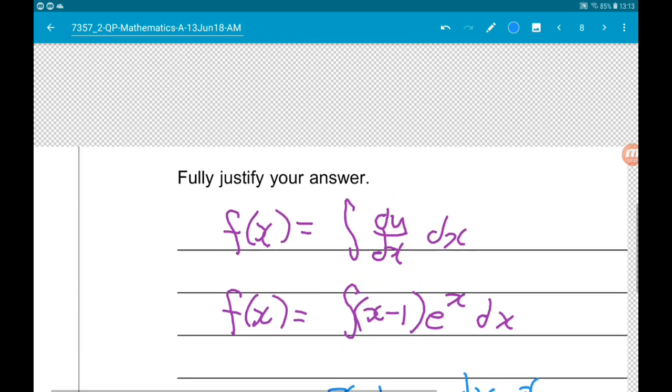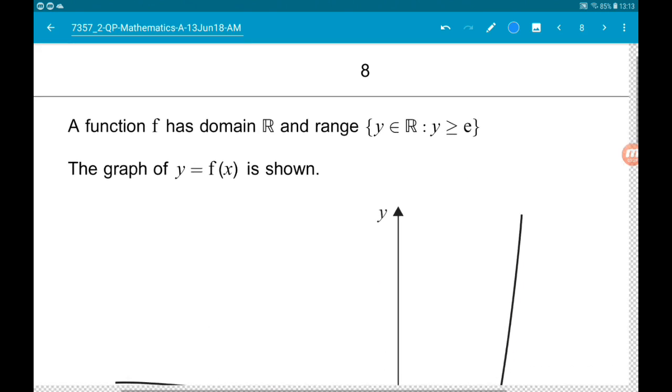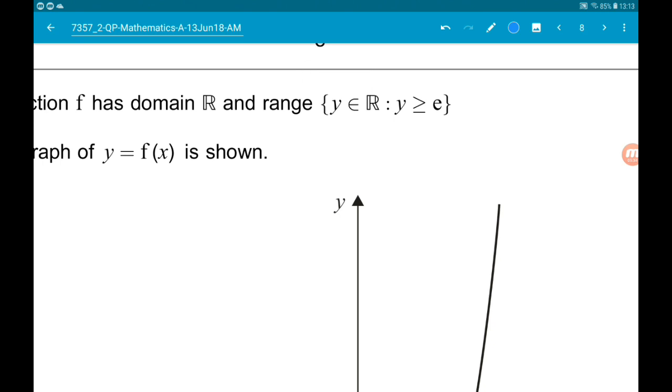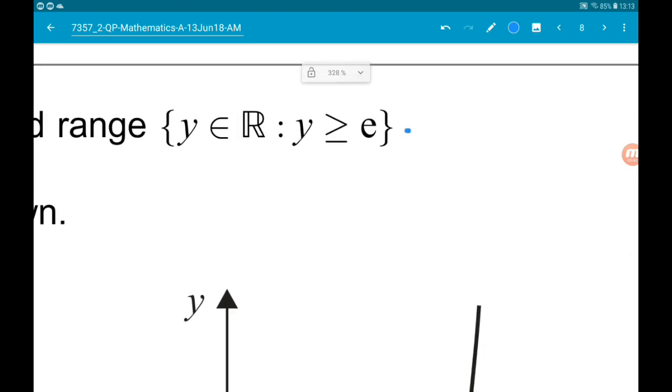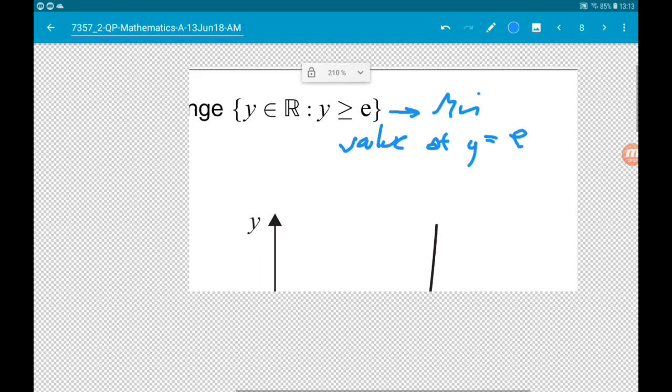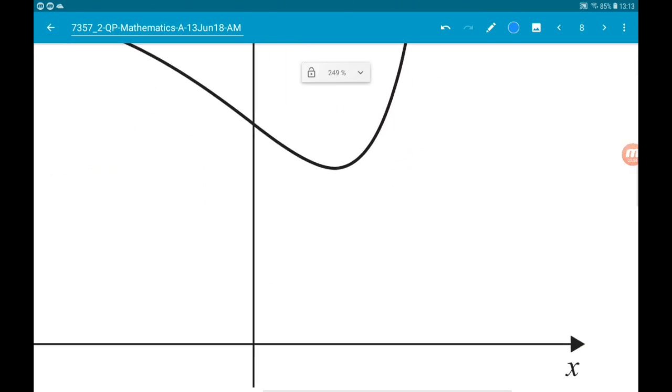So now what we need to do is find the value of c. So going back to what we were told in the question, function has a range such that y is in the reals and y is greater than or equal to e. This tells us the minimum value of y is equal to e. Now on the graph, we know this point, it's going to be this point here. So we know the value of y at that point. If we can now work out the value of x at this point, then we are able to substitute values for y and x into the expression for f of x, which will allow us to find c.